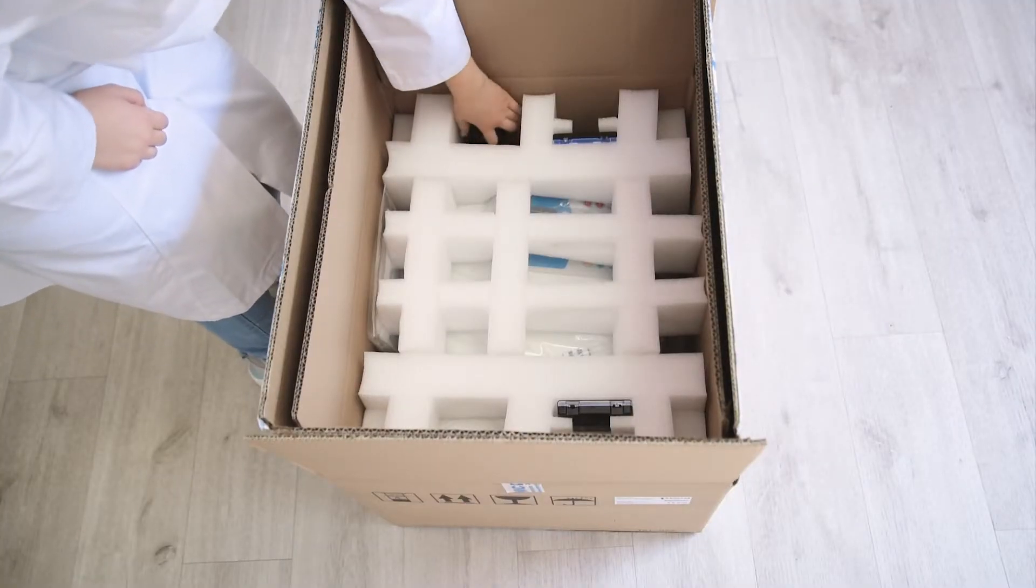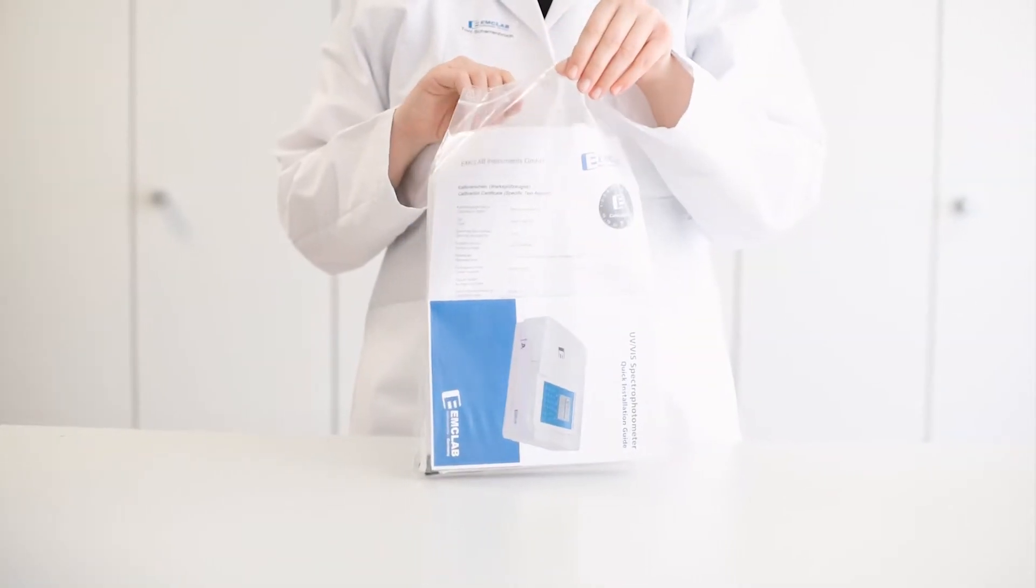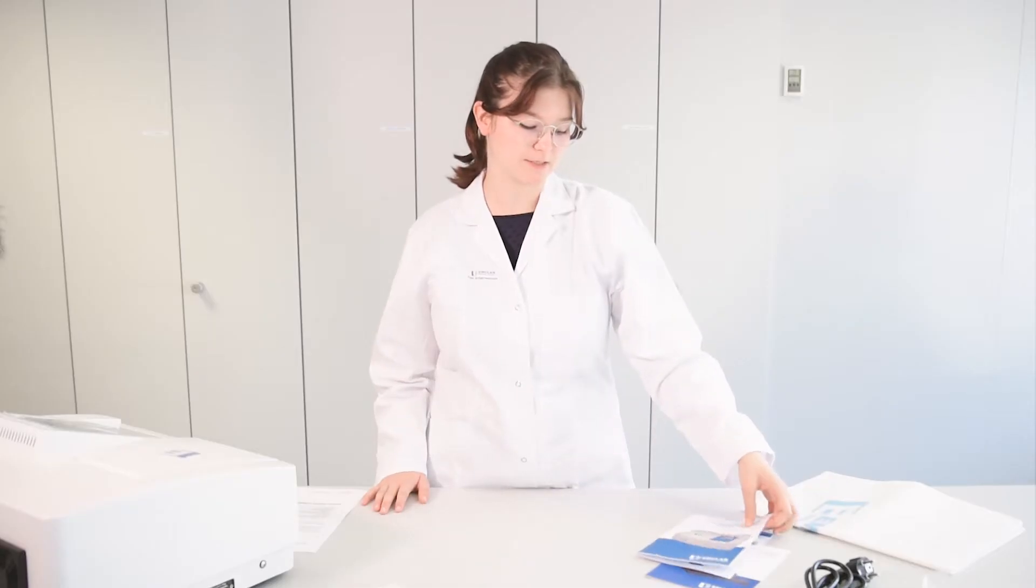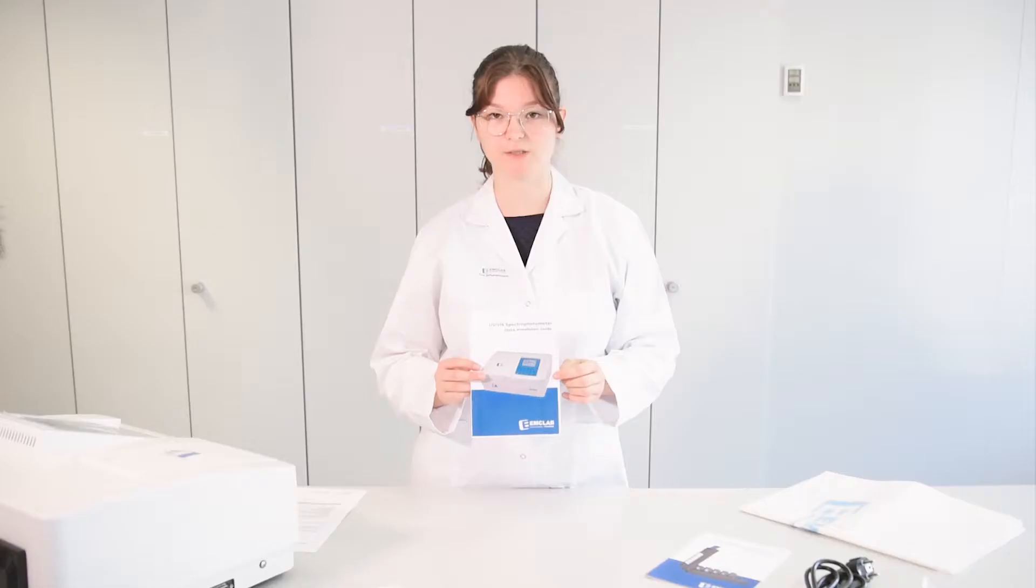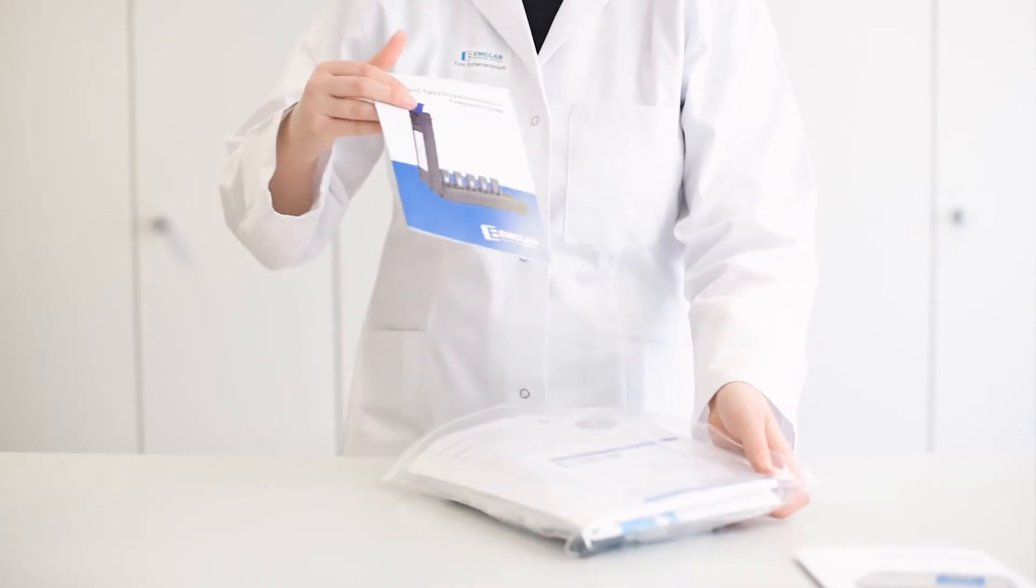Next there is the power cable included, and then we have an accessory bag with the following items. There is the quick installation guide to help you set up the instrument quickly so you can start right away. Then we have the calibration guide, and if you need any more support you can always go back and watch our first tutorial.